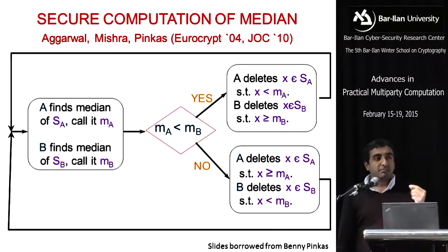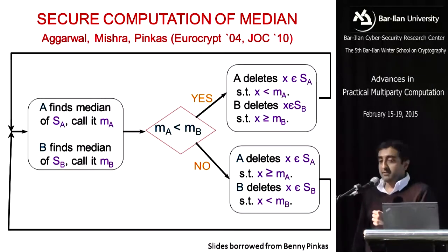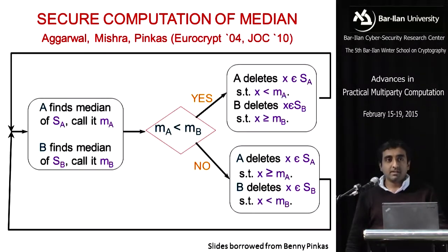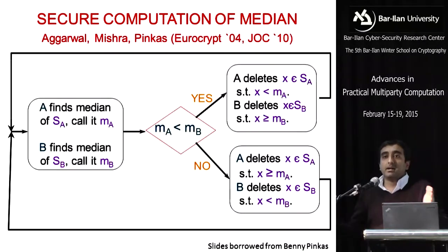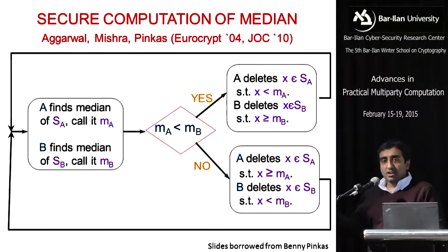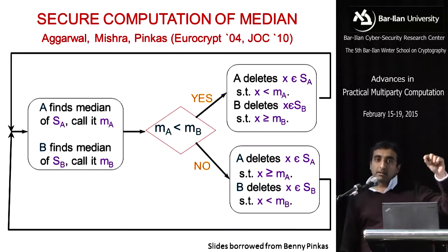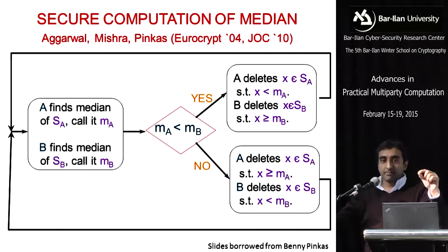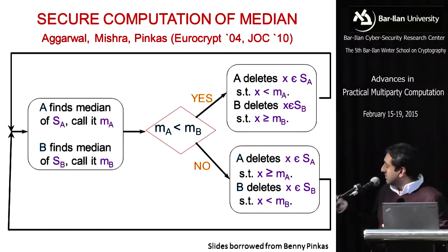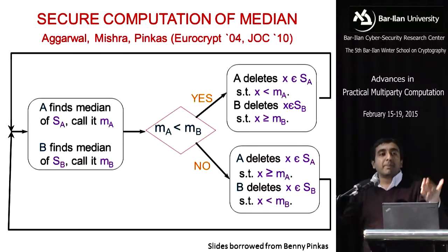I'm going to start with this really beautiful work that appeared in Eurocrypt 2004 from Benny's group. This was about securely computing the median. Say Alice and Bob have a set of inputs of different sizes, and they want to securely compute the median among their sets of data. This is an algorithmic picture of how this is done — it's an iterative algorithm. It starts with Alice and Bob locally computing the medians in their individual sets of data and then securely comparing the medians.